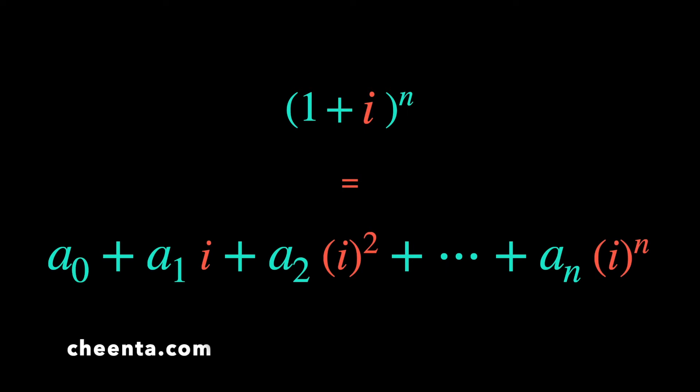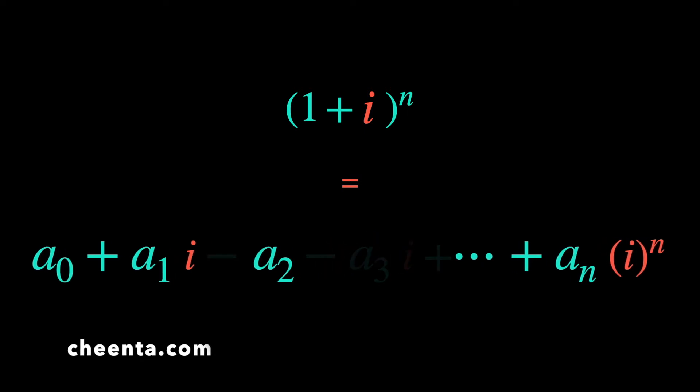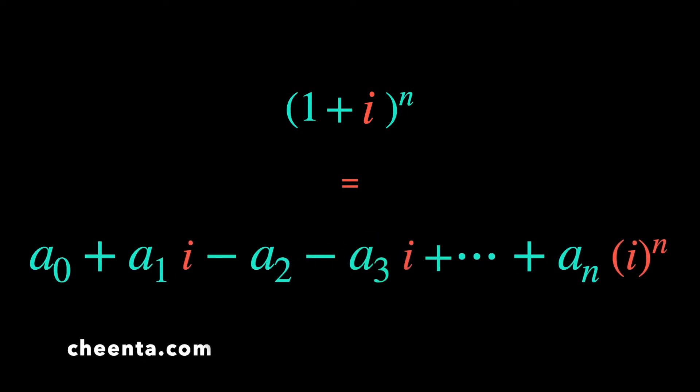Notice that i² = −1, i³ = −i, and so on. If we simplify, we get: (1 + i)ⁿ = a₀ + a₁i − a₂ − a₃i + … This is the expression we will come back to in a moment.